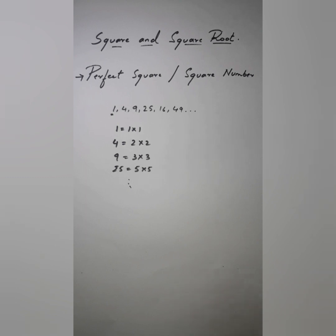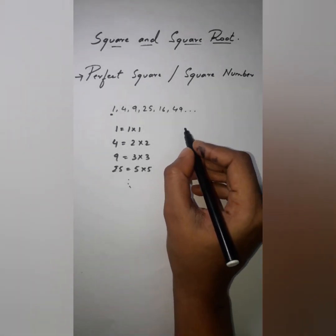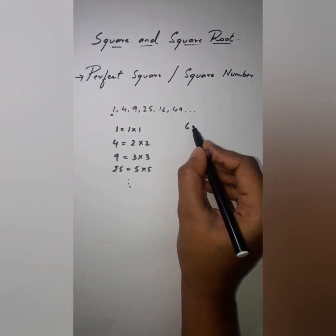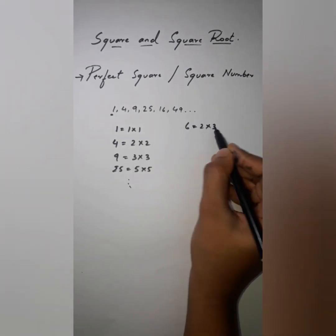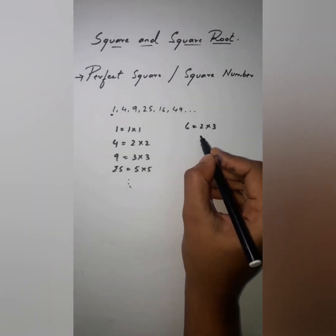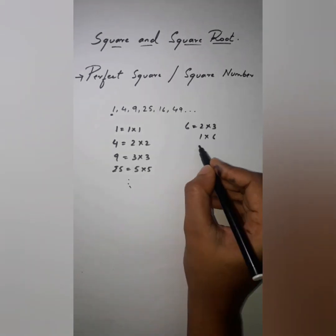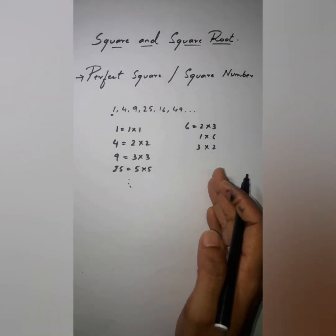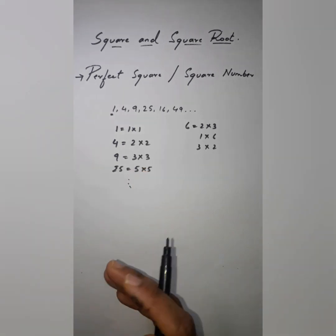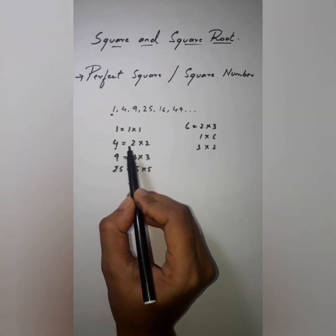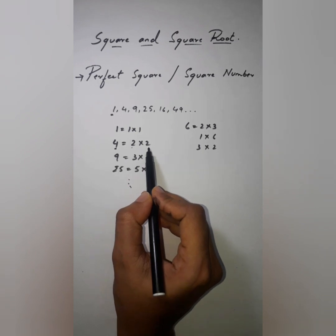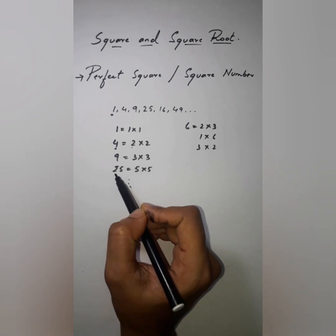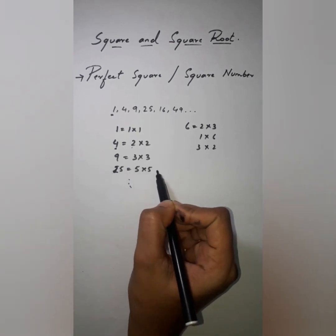Now, can I write any number this way? Let me take 6. I can write 6 as 2×3, or 1×6, or 3×2, or 6×1. If you observe this pattern, I'm getting 4 by multiplying 2 with itself, and 9 by multiplying 3 with itself, and 25 by multiplying 5 by itself.